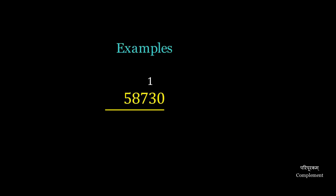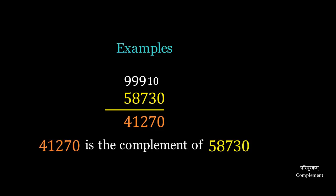58,730 has a 0, which we ignore, so we put 10 above the 3 and 9 above the other digits. 9 minus 5 is 4, 9 minus 8 is 1, 9 minus 7 is 2, 10 minus 3 is 7, and the 0 remains, giving us 41,270 as the complement.